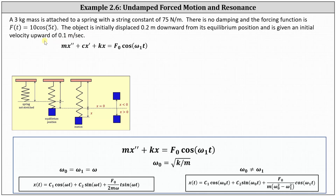We can model the mass on a spring using the differential equation mx'' + cx' + kx = F₀ cos(ω₁t), where m is the mass, c is the damping or friction constant — which in this case is zero because there's no damping — and k is the spring constant. The forcing function is given by F₀ cos(ω₁t).